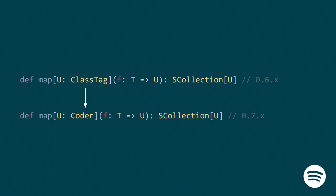Here's how it works in Scio. If you use a map function on an SCollection, in Scio 0.6 the signature required a ClassTag so Kryo could get type information at runtime and derive a coder. Now in Scio 0.7, instead of requiring a ClassTag, we require a Coder — you need to explicitly know how to serialize the type. We replaced that type constraint from ClassTag to Coder, so that when you map over something of type U, you need a Coder of U.